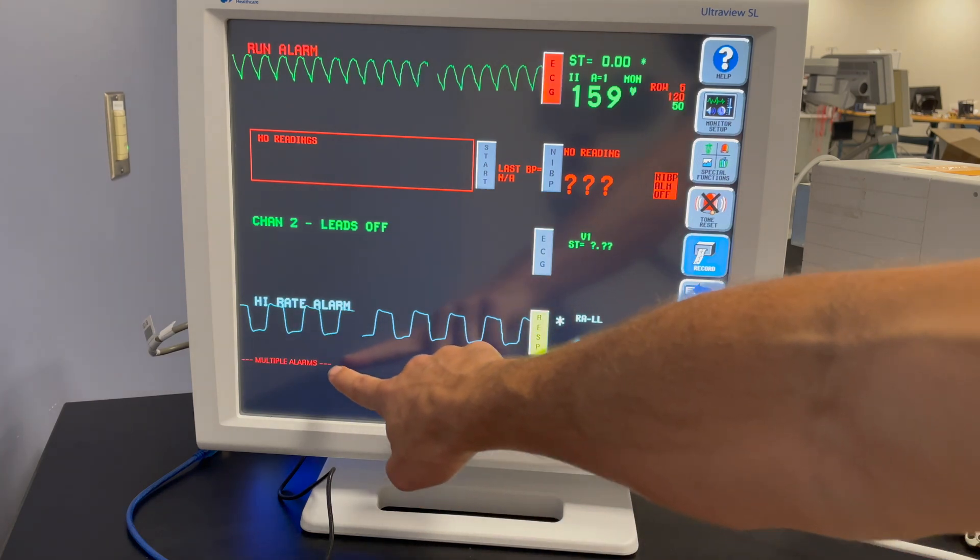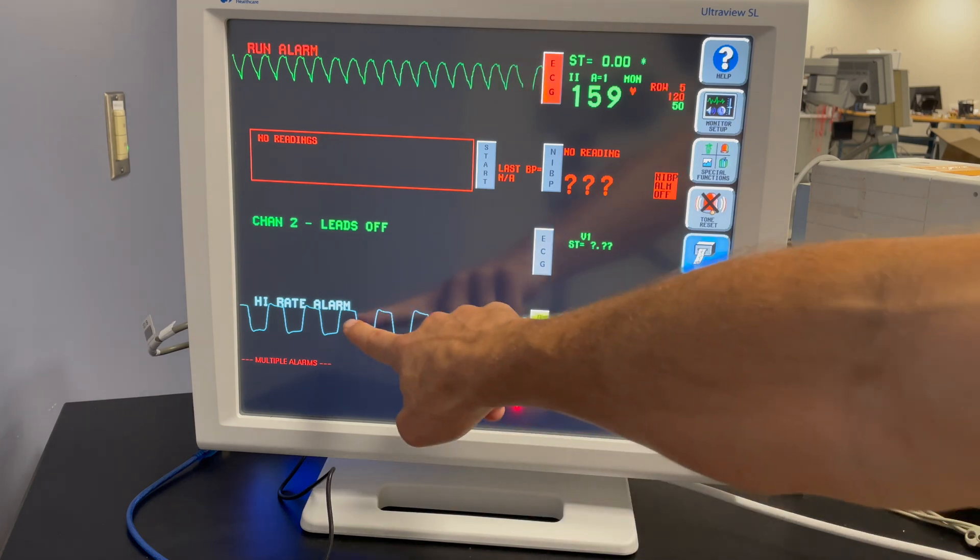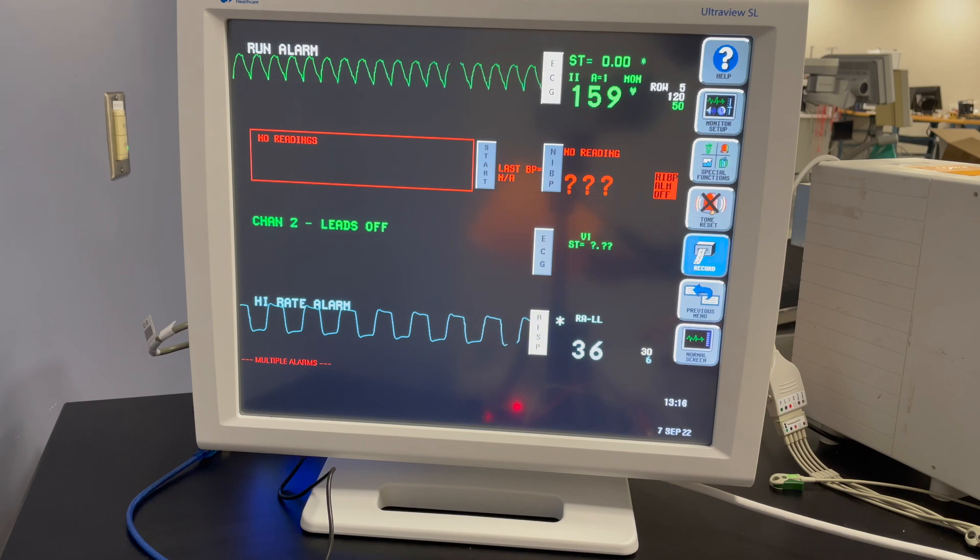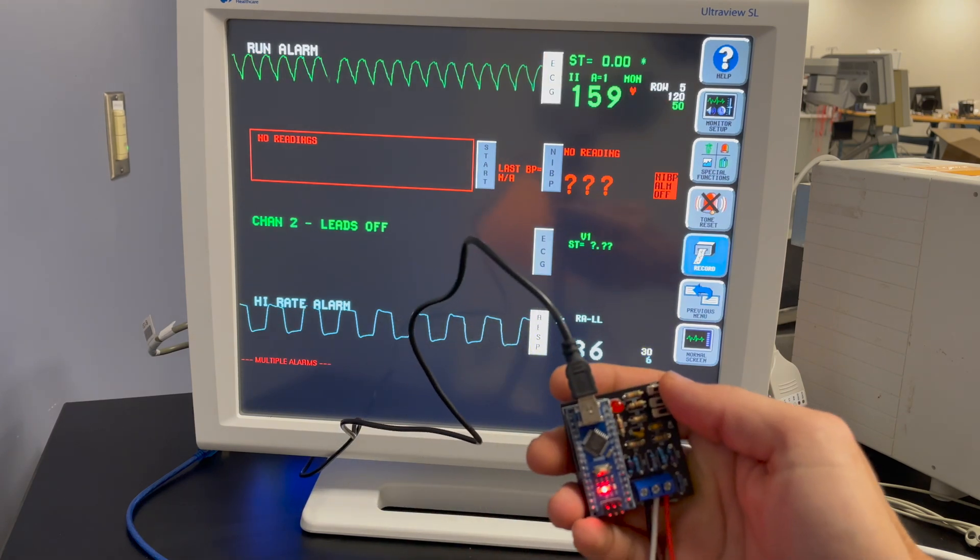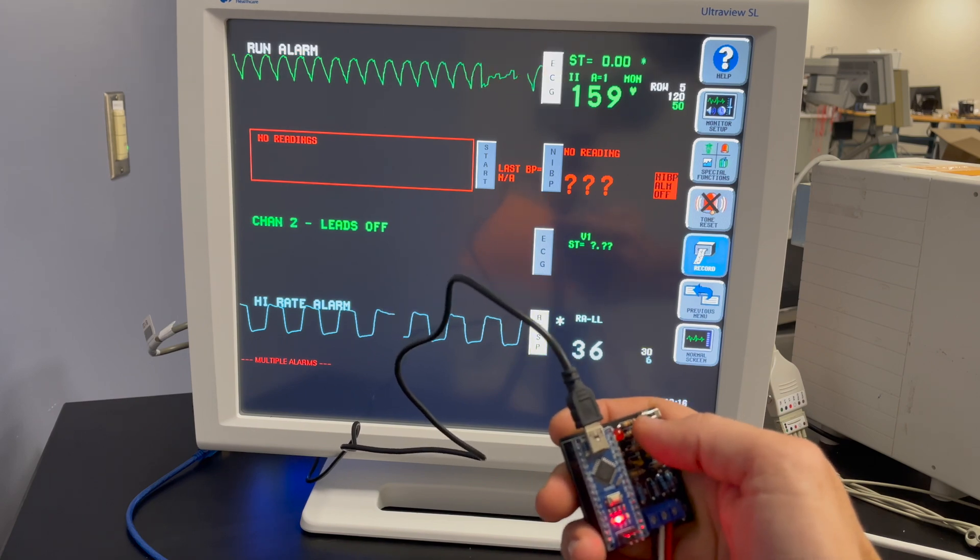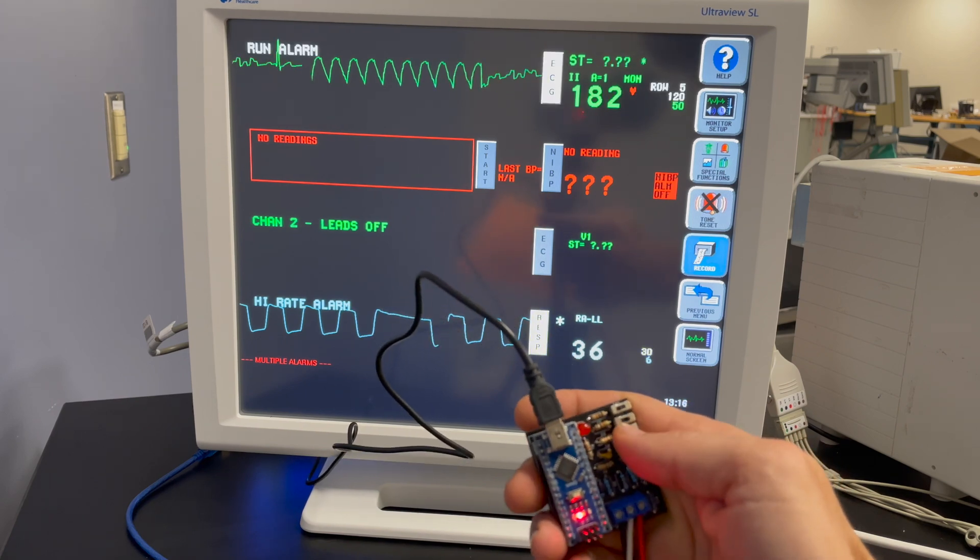You can see we have a warning for multiple alarms down here. You have the high rate alarm going here, you also have a run alarm. If you don't want to do multiple alarms at the same time, what you can do is use a different combination on your toggle switches. You can set this to left on the top, right in the middle, and left on the bottom.